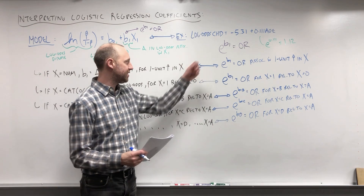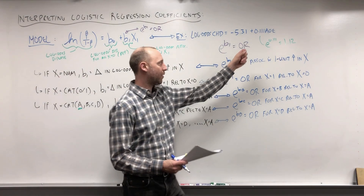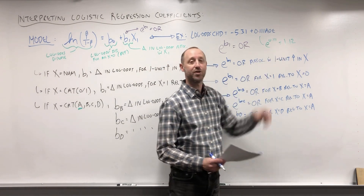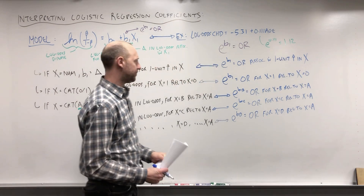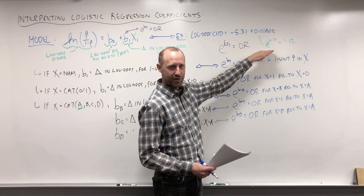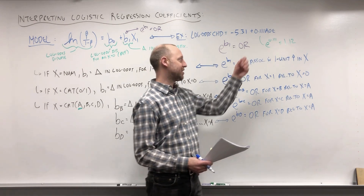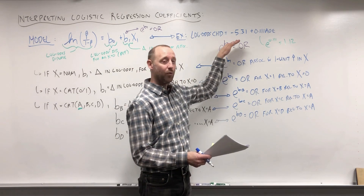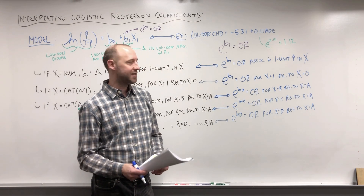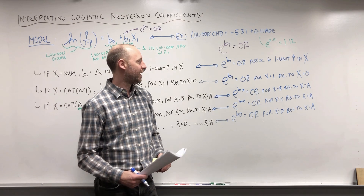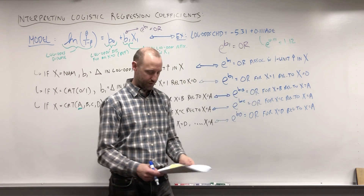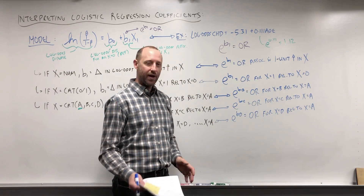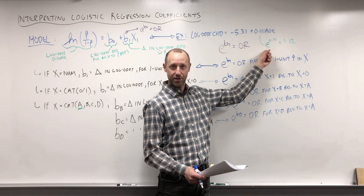Those are the generic interpretations. In our example, we're in the numeric x case: exponentiating the coefficient gives an odds ratio of 1.12, meaning the odds of coronary heart disease go up 12% with every one-year increase in age. We need to be careful with these interpretations right now — we haven't built a good model or adjusted for any variables. Later we'll revisit model building and variable selection to get an unbiased or least-biased estimate. I'll stop here and go into a separate video to justify why exponentiation gives us an odds ratio.